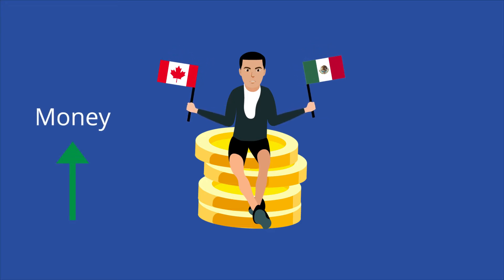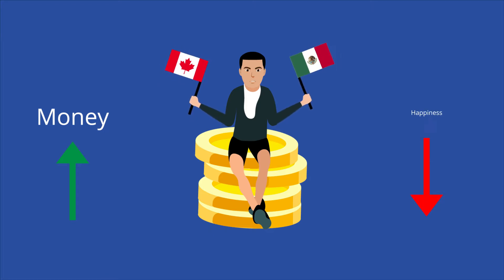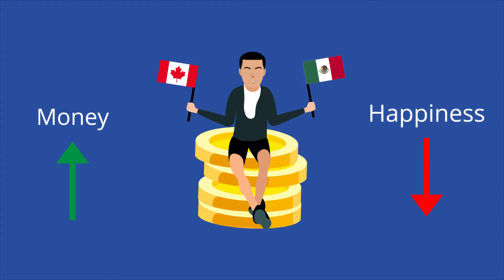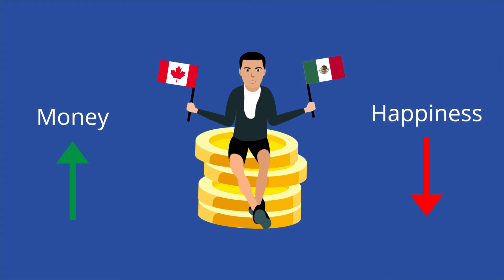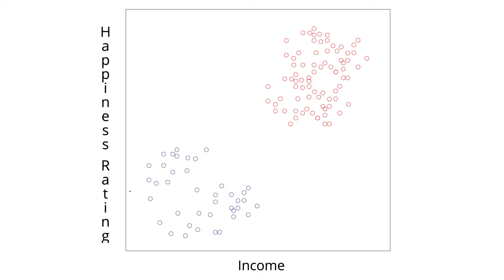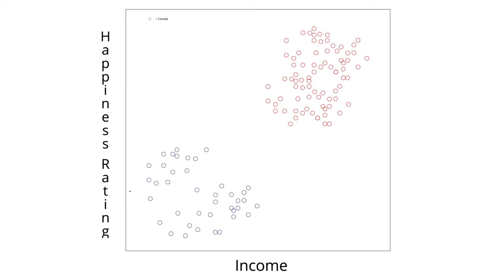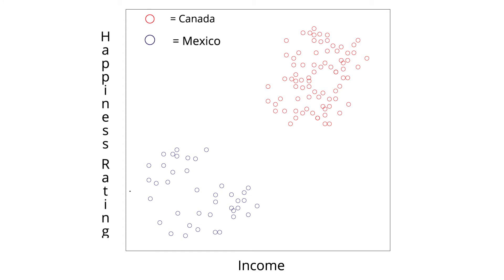It may appear then that the saying is true — the more money you get, the less happy you will be. In other words, there is a negative correlation between money and happiness. However, when you aggregate or combine the data from Canada and Mexico into one evaluation, the opposite is true.